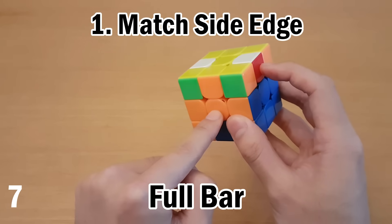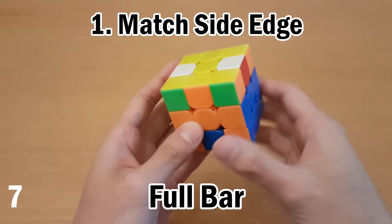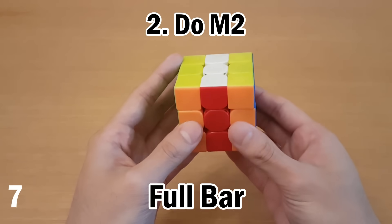You look at this, you look at this and see how you're going to match this edge to the correct center. These don't match. So you're going to move this the other way instead. So M2 puts the orange back here. You'll move this one here. Afterwards, always do M2.